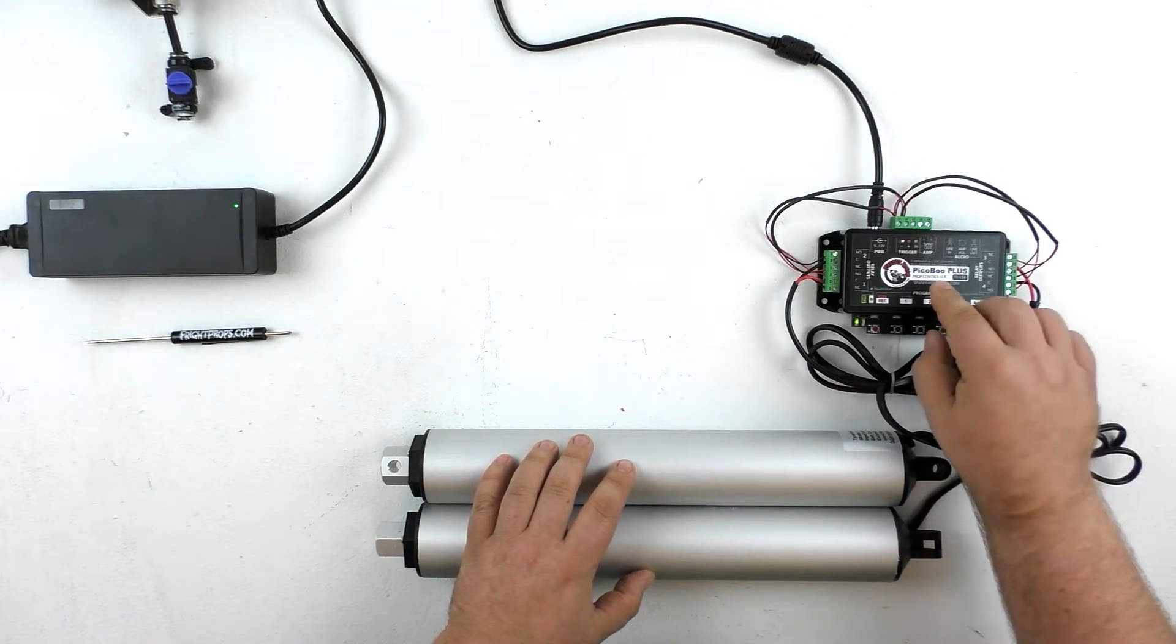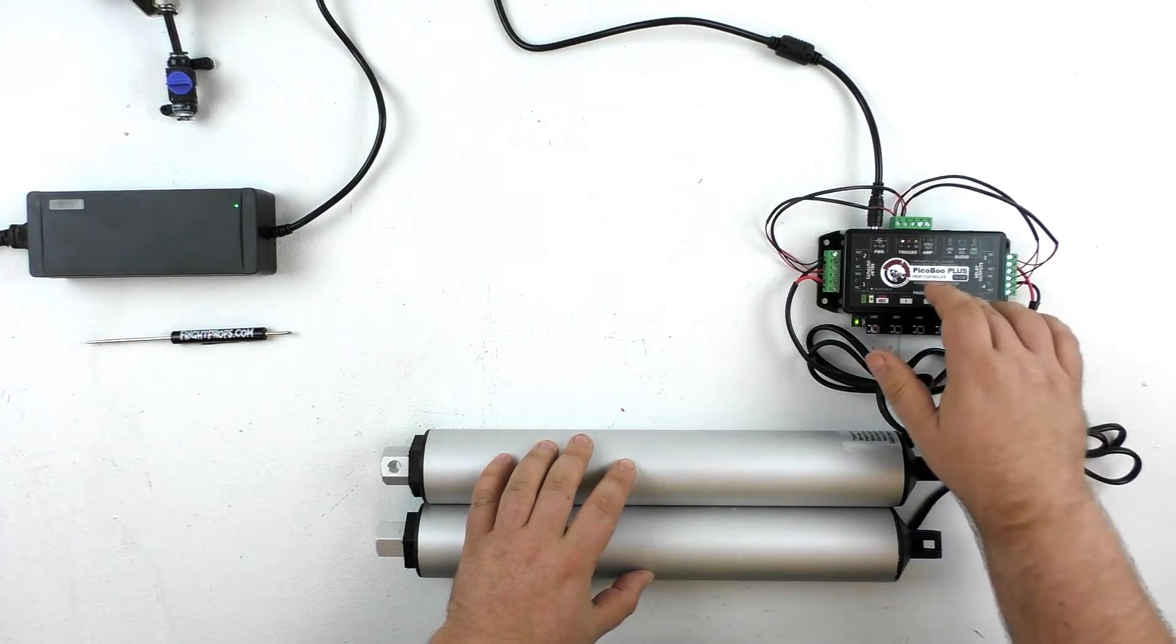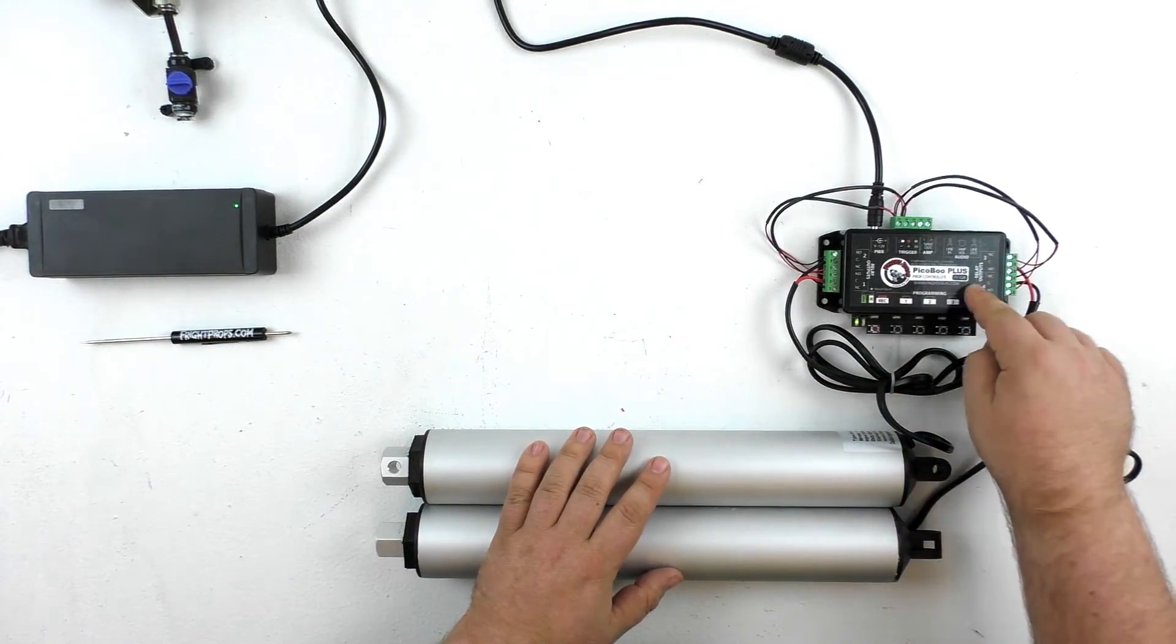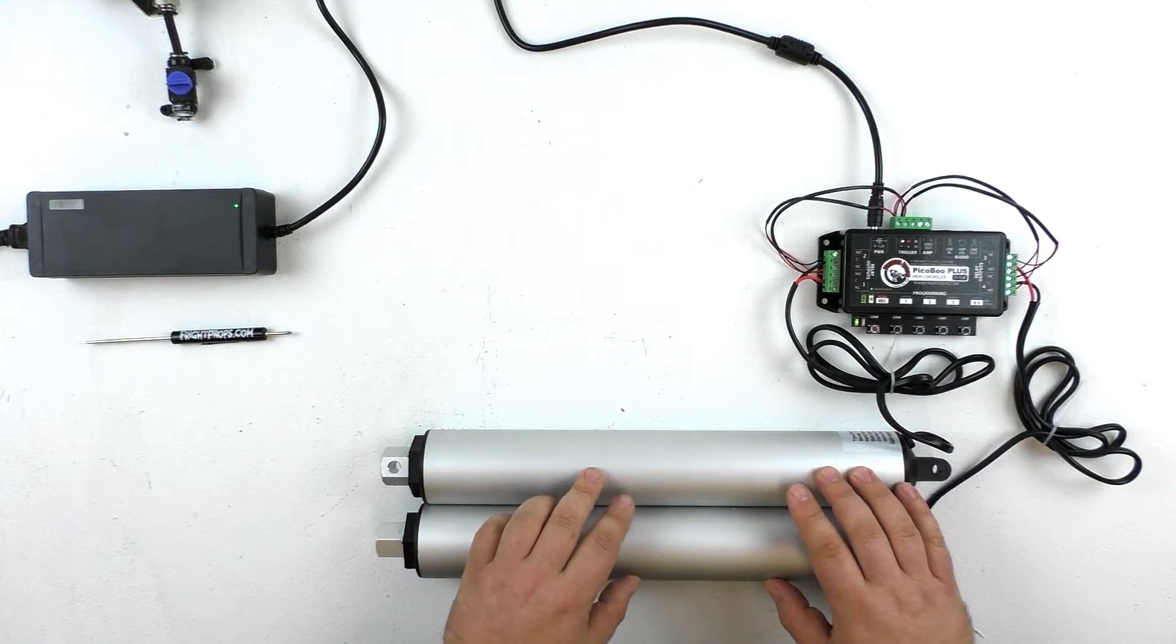Once you've recorded your animation, the Peekaboo Plus will play it back each time it's triggered. So you could attach a motion sensor, a step pad, or any other trigger to the Peekaboo Plus. It would activate your linear actuators on your prop.